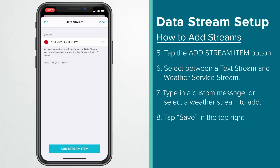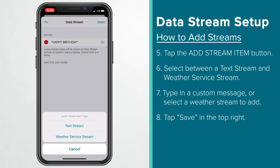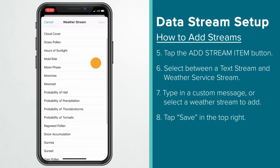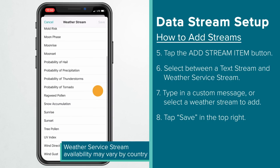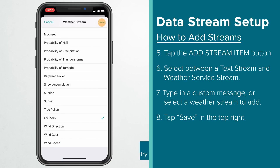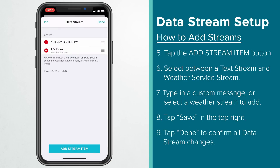Let's now add a few weather service streams to see how these will function. Tap the Add Stream Item button again, and this time select Weather Service Stream. A list of available weather stream options will then appear. Select the one you'd like to add, and then tap Save in the upper right. It may take a few seconds to get this loaded in, but once complete, you should see it listed in your active section.